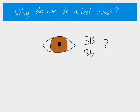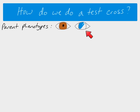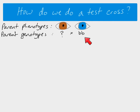The reason we do a test cross is so that we can find out what the genotype is for an individual that shows the dominant phenotype. We cross that individual with one showing the recessive phenotype — in this case, blue eyes — because although we don't know the genotype of the brown-eyed individual, we do know that if an individual shows the recessive phenotype it must be homozygous recessive. So we always know the genotype of the recessive individual.